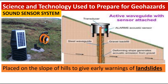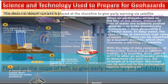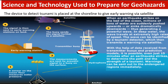Let's look at an early warning system for landslide prediction. This is a type of sound sensor system that has been developed to predict the likelihood of a landslide. It is placed on the slope of hills and works by measuring and analysing the sound behaviour of soil to establish when a landslide is imminent, so that preventative action can be taken.